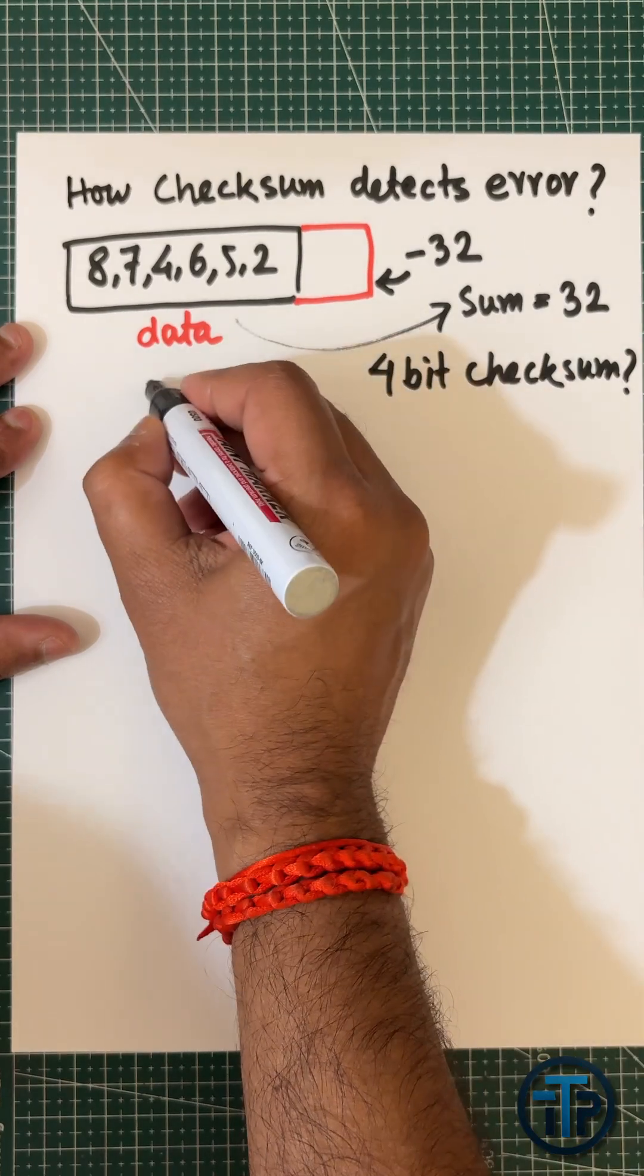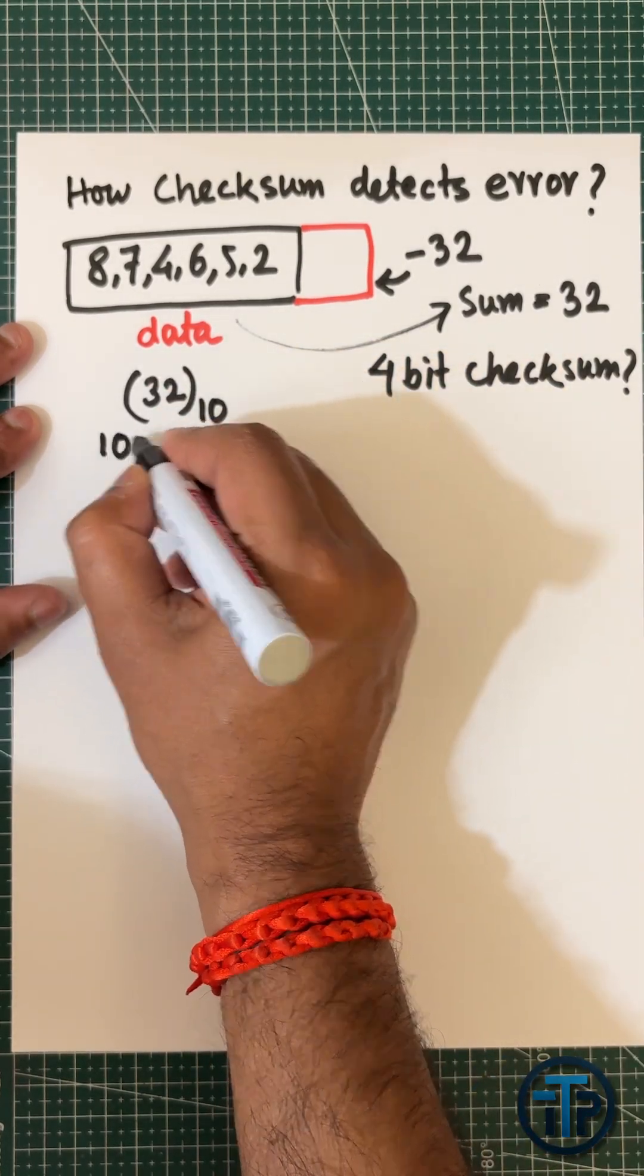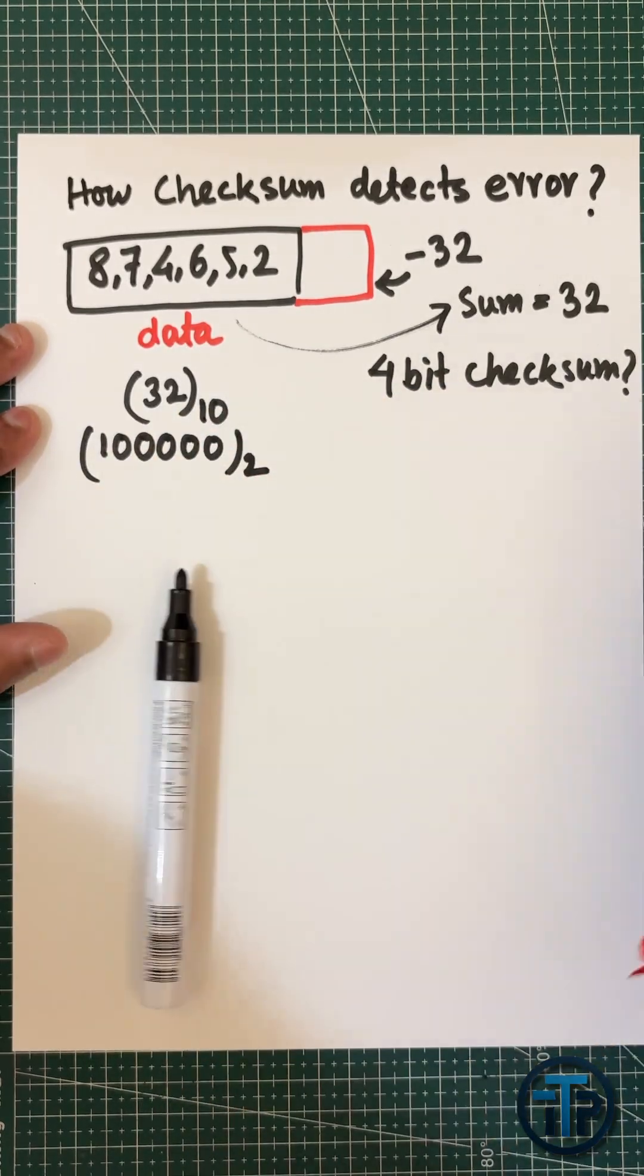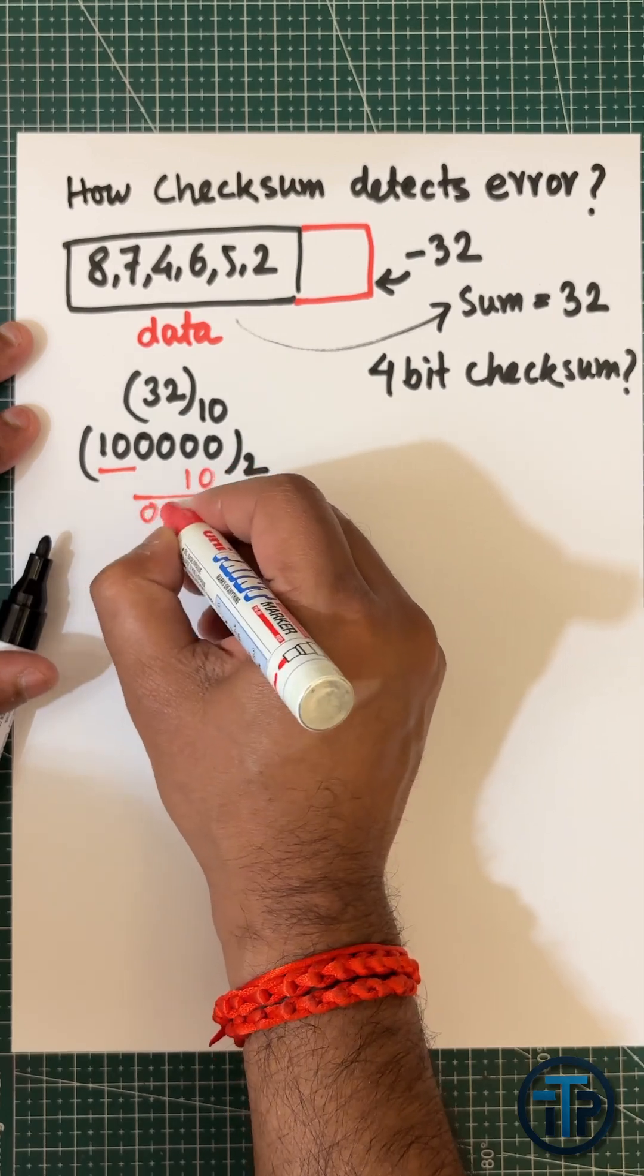To calculate the 4-bit checksum, first convert 32 to binary: 100000. Since this is a 4-bit checksum, we need to do the wrapping process.